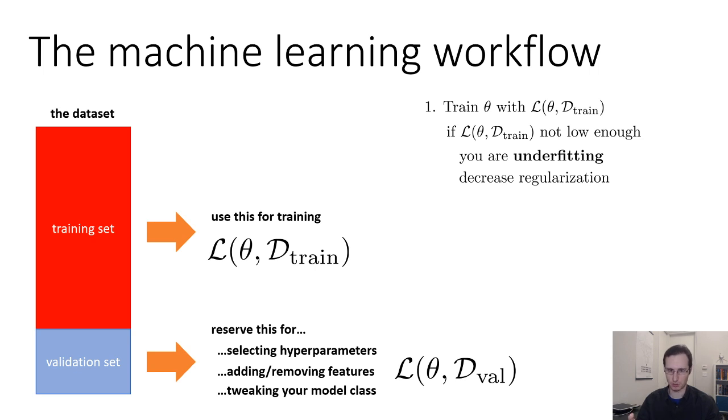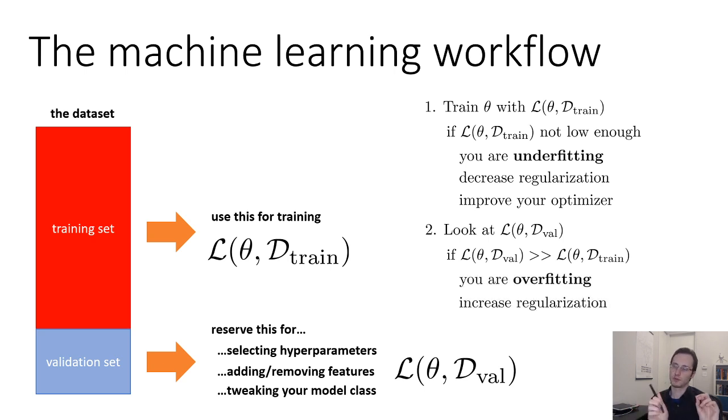Well, you can decrease regularization. Less regularization means a better fit. You can improve your optimizer. You can add more features, add more parameters, use a bigger, better model. If you've done all that, and your training loss, your L(θ, D_train), is low enough and you're happy with it, then look at L(θ, D_val). When you look at L(θ, D_val), one of the things to watch for is if L(θ, D_val) is much larger than L(θ, D_train). So maybe your cat versus dog classifier has a training error of 1%, but the validation error is 20%. That probably means that you are overfitting. If you are overfitting, you can increase the amount of regularization or do other things that somehow reduce your model capacity. You could also go out and get more data. And once you've done that, you can repeat the process.